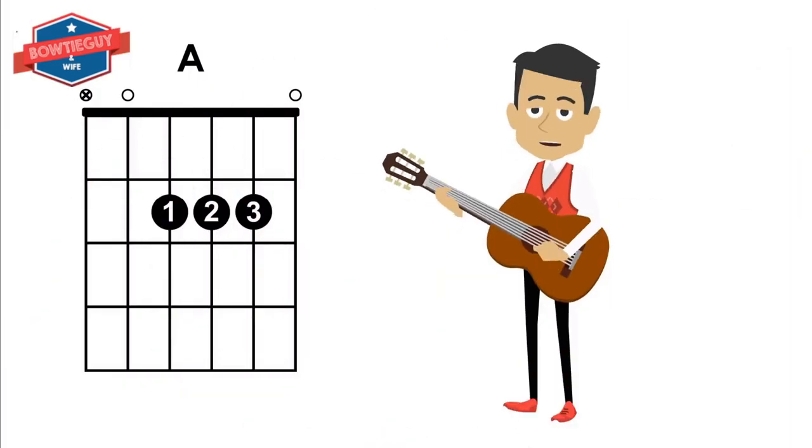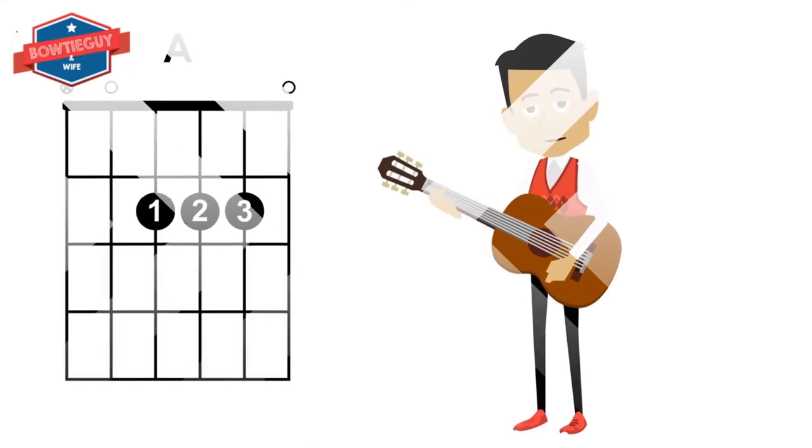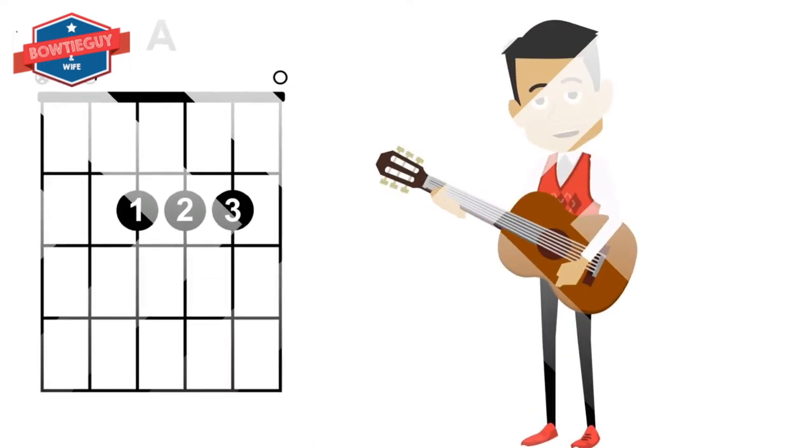This is an A chord. Notice where the strings have an open circle above them. Those are the strings that you're going to strike. That's the A chord. You try it. See if you can play an A chord.